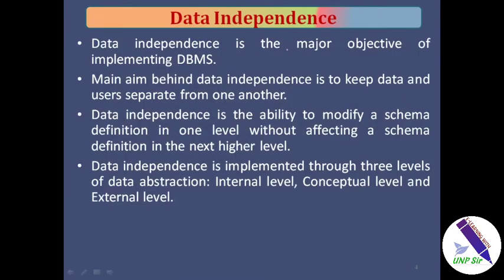Data independence is one of the major objectives of DBMS. The main aim of data independence is to keep data and user separate from one another. That means the user does not need to know where the actual or physical data is stored, but he or she can still access their data. Data independence is the ability to modify a schema definition at one level that does not affect the schema definition at the next higher level. Data independence is implemented through three levels of data abstraction.